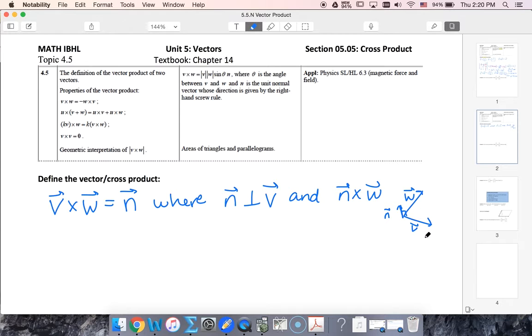One way to find the vector product is using determinants. Another way to find the vector product is the way your formula book shows you.